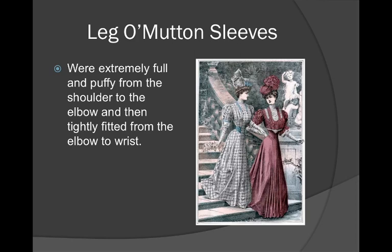We also have something called the leg-o-mutton sleeve that was very popular. If we look at this picture we can see why it's called a leg-o-mutton — a mutton is just a lamb, so really it's a leg of lamb sleeve and it looks like one. It had a very extremely puffy shoulder and usually stayed a bit puffier to the elbow, then was very tightly fitted for the rest of the sleeve.